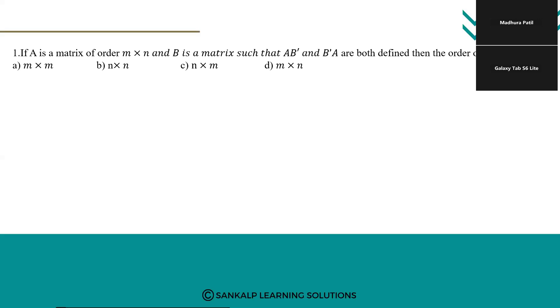The question goes as if A is a matrix of order n cross n and B is a matrix such that AB dash and B dash A both are defined. Then what is the order of matrix B?